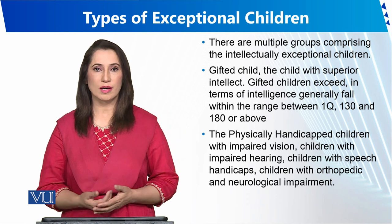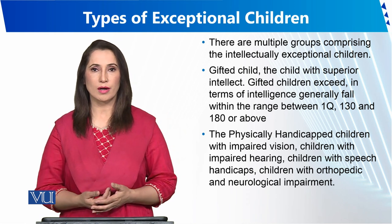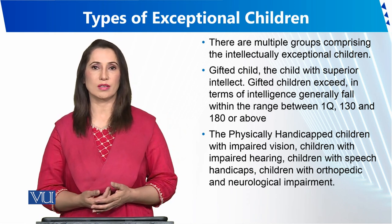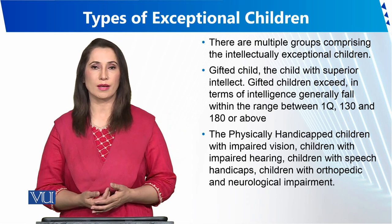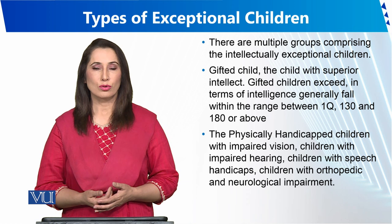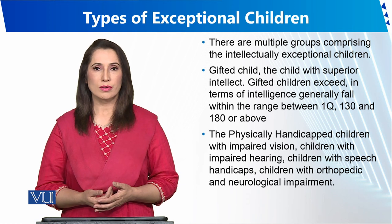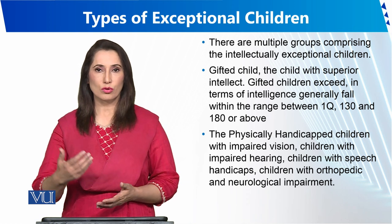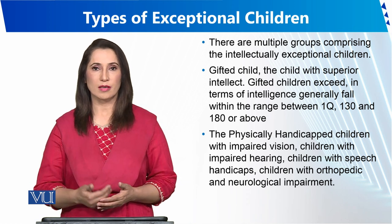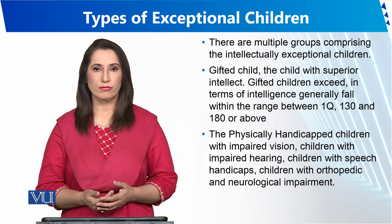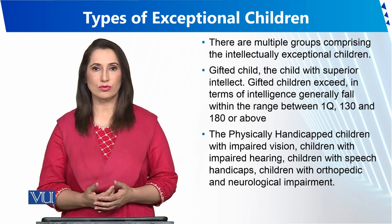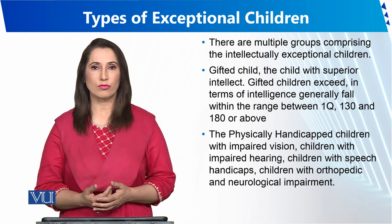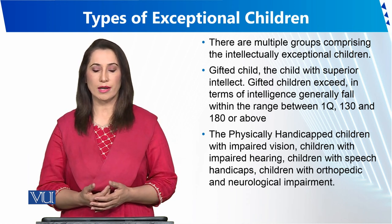The IQ can go up to 180, and because of their high IQ they are called gifted. So because of IQ, the first group of exceptional children is gifted children, which we can positively say is a blessing of God — that we have a gifted child.